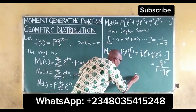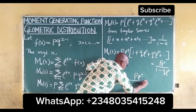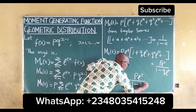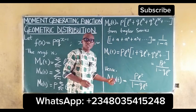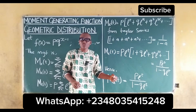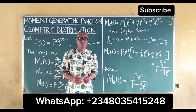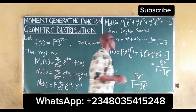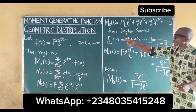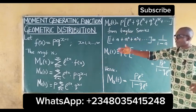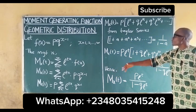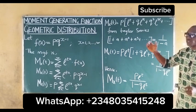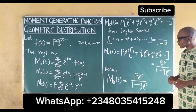Hence, our moment generating function for the geometric distribution can be written as M_X(t) = p·e^t divided by (1 minus q·e^t). This is how we obtain the moment generating function for the geometric distribution. Once we follow this process it will be very easy to compute it.